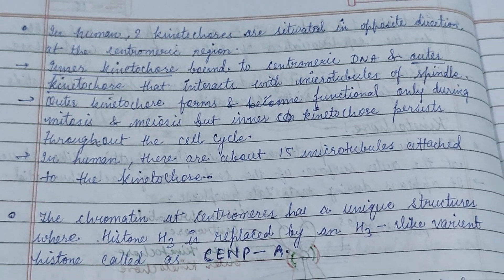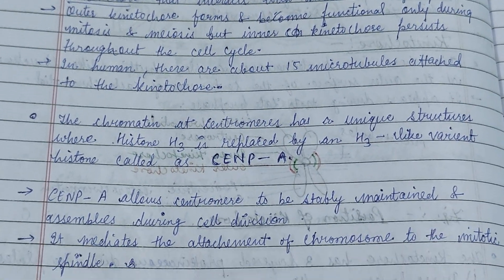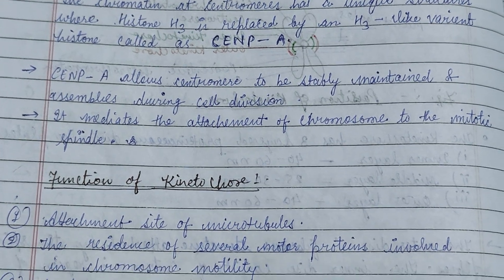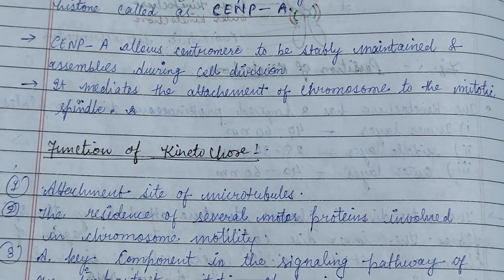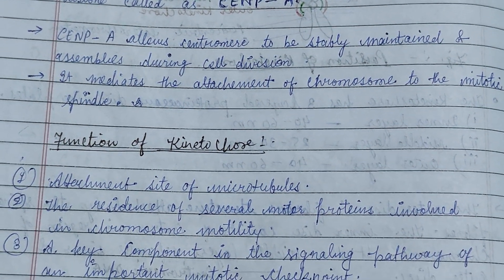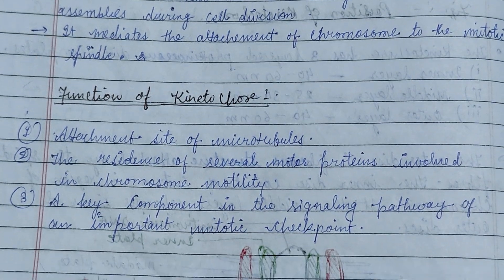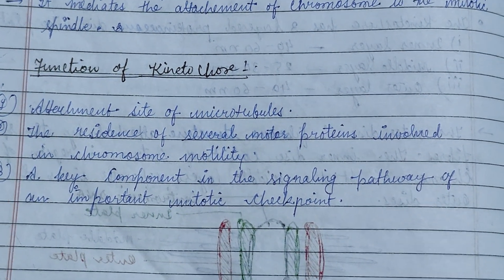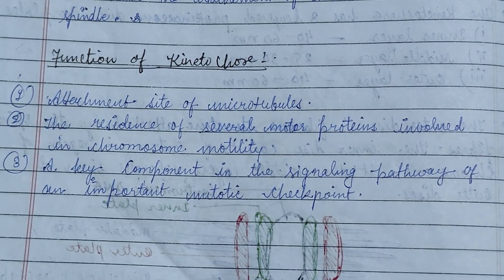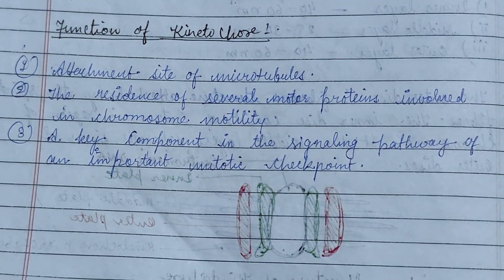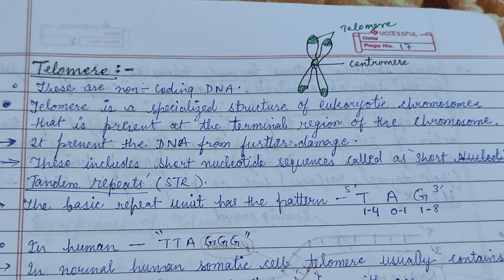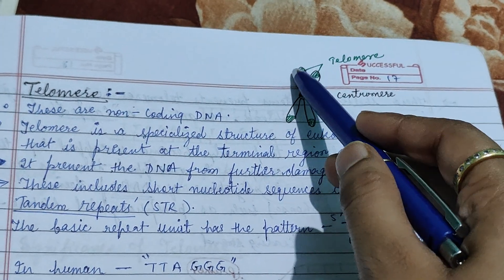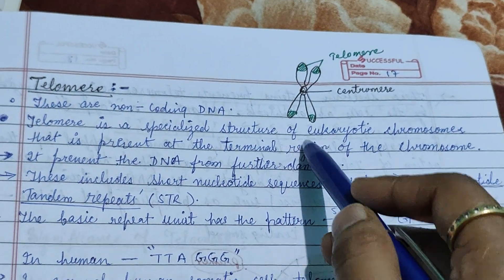The kinetochore consists of the inner kinetochore, mid kinetochore, and outer kinetochore. CENP allows the centromere to be safely maintained and assembled during cell division. The function of the kinetochore includes the attachment site for microtubules, and several motor proteins are involved in chromosome motility.